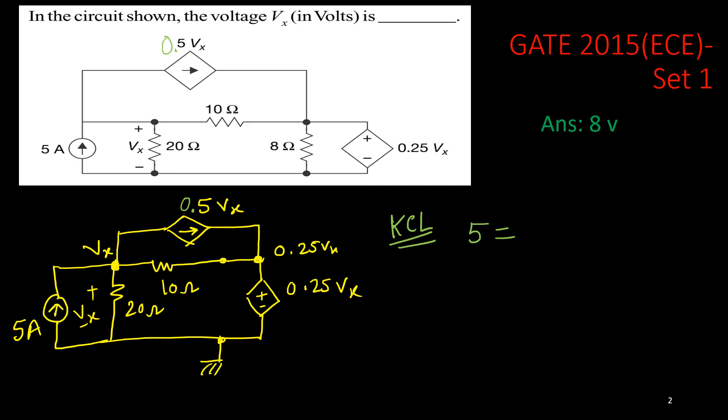It is 0.5. This current solved. So, it is 0.5Vx. It is leaving. And leaving through this, 20 ohm resistance will be Vx upon 20 plus the current through this 10 ohm resistance would be Vx minus 0.25Vx upon 10. You need to solve this equation and you will get Vx.